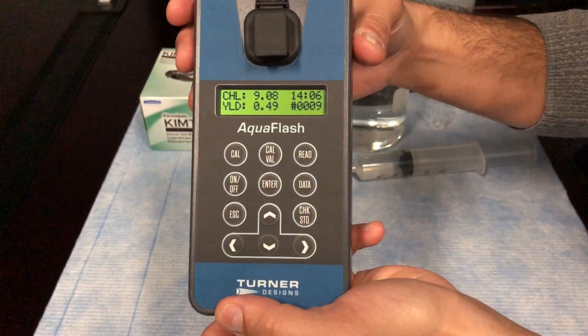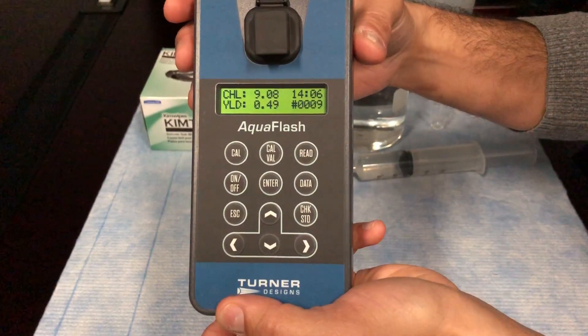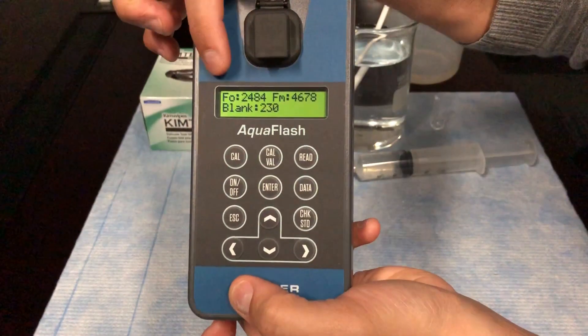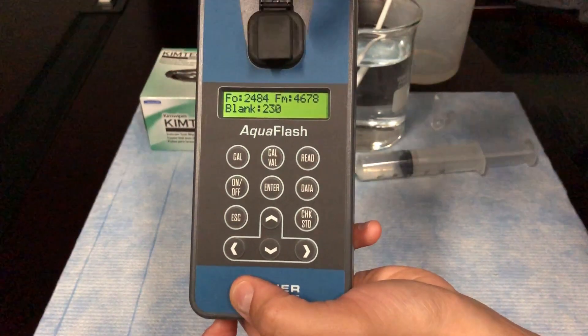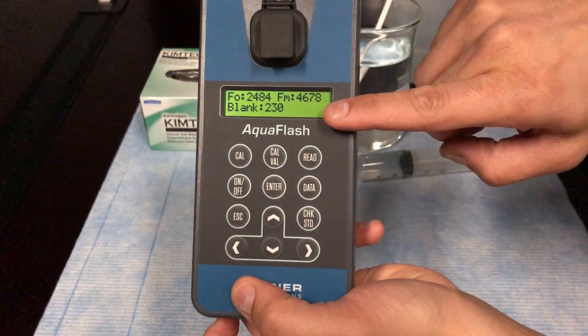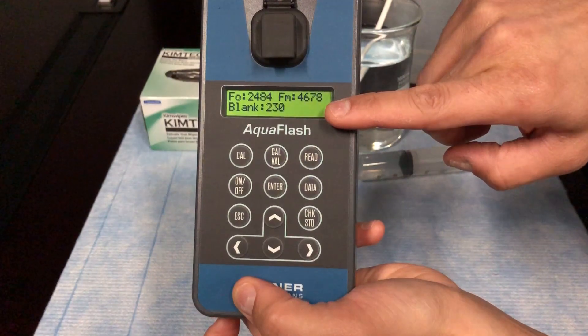If you want to view raw fluorescence data that were used in calculating the yield, press the down arrow key to view the minimum fluorescence FO, the maximum fluorescence FM, and the background fluorescence saved during calibration.